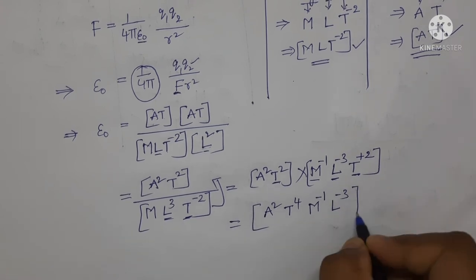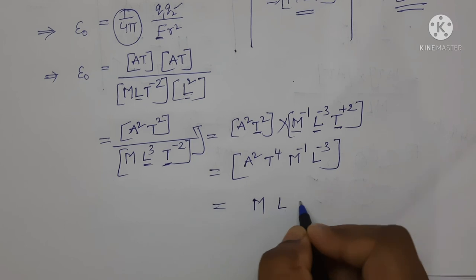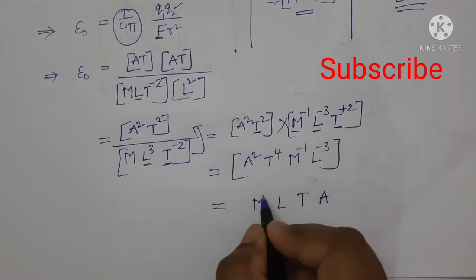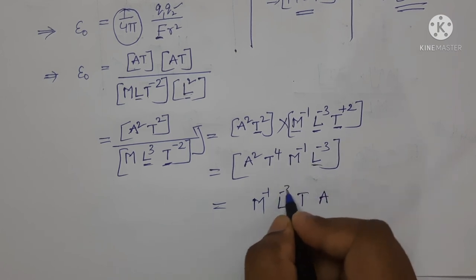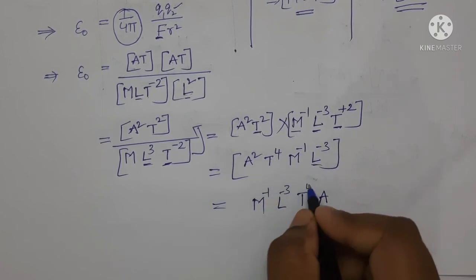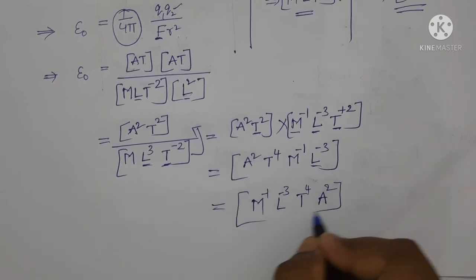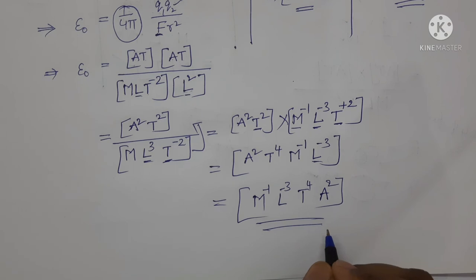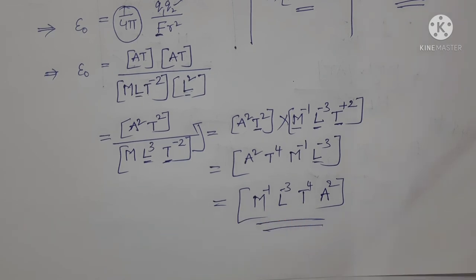Now write this in the M, L, T, A format. For M: M power minus 1; for L: L power minus 3; for T: T power 4; and here it is A square. This is the dimensional formula for permittivity of free space. I hope you liked the video. Please do like, share and subscribe. Thank you for watching this video.